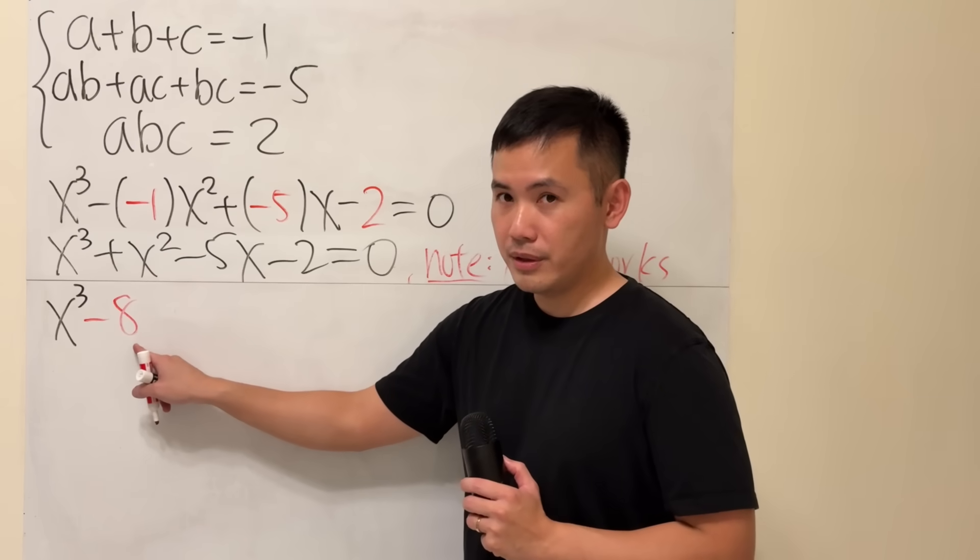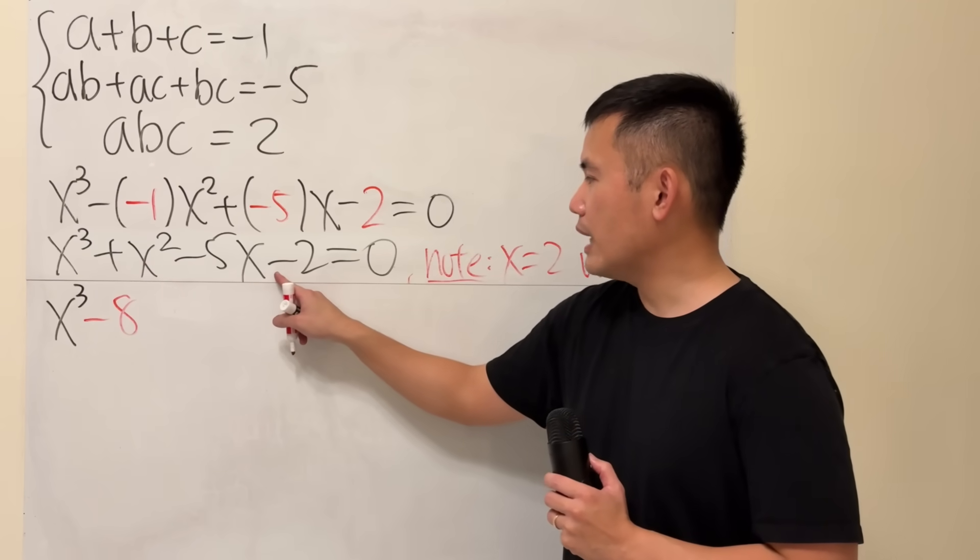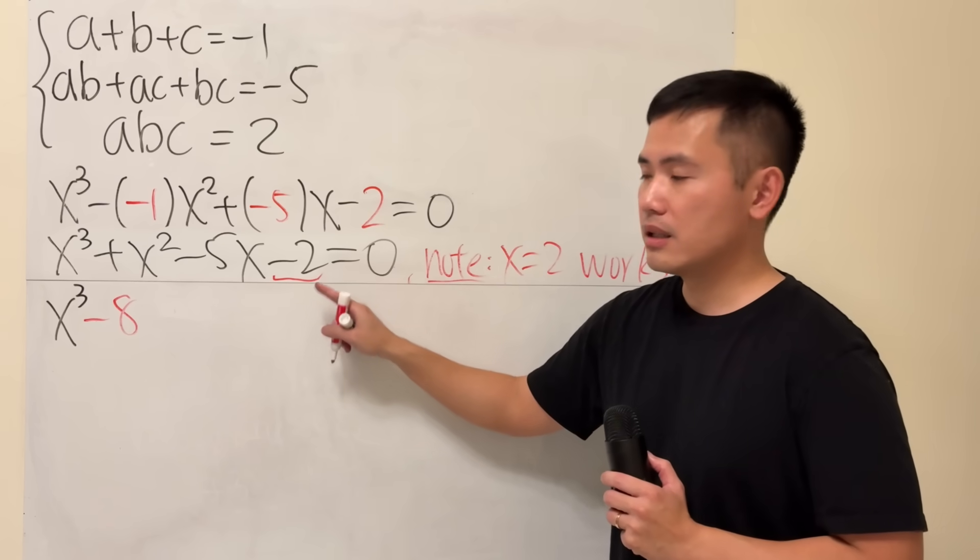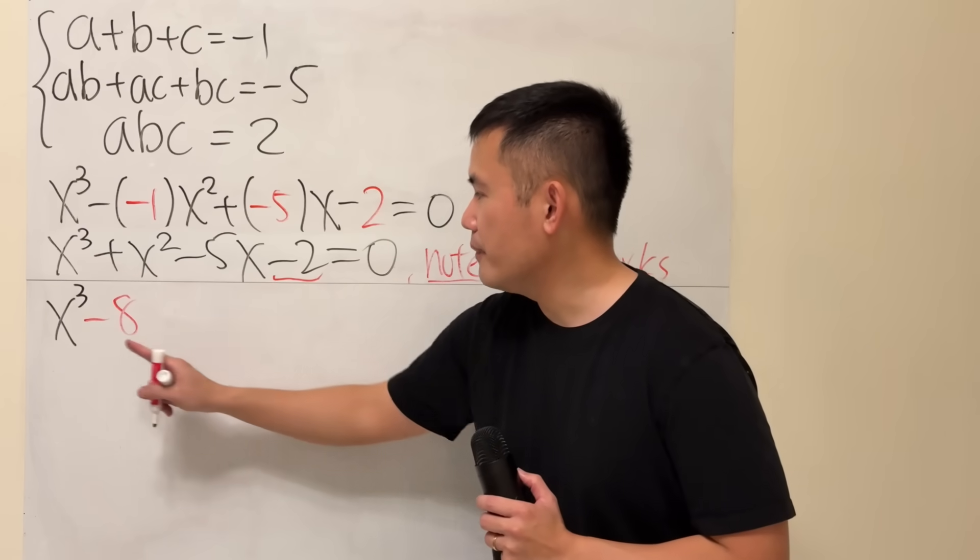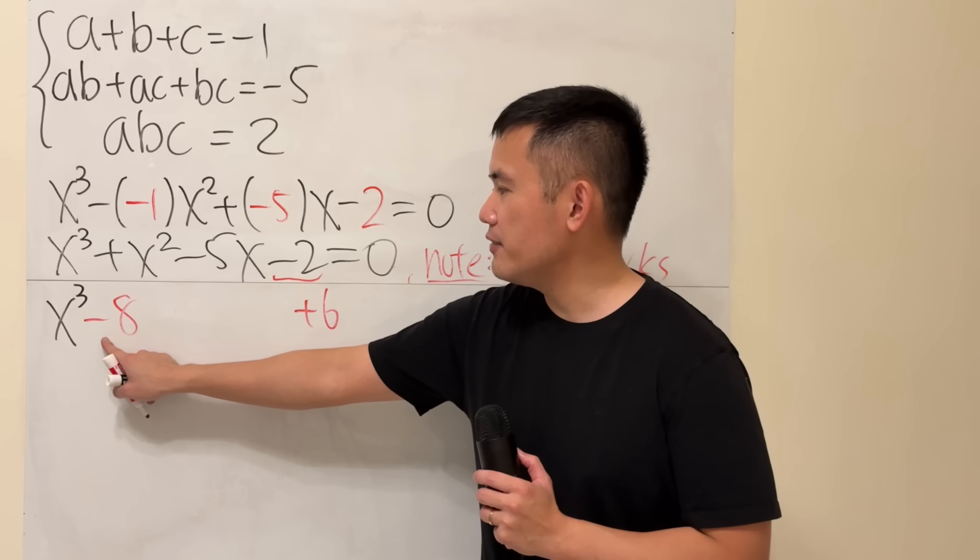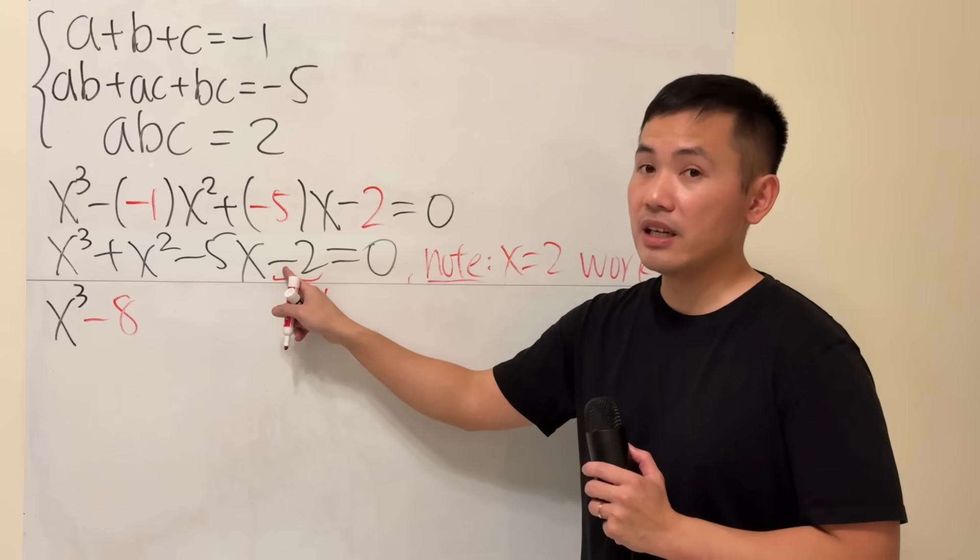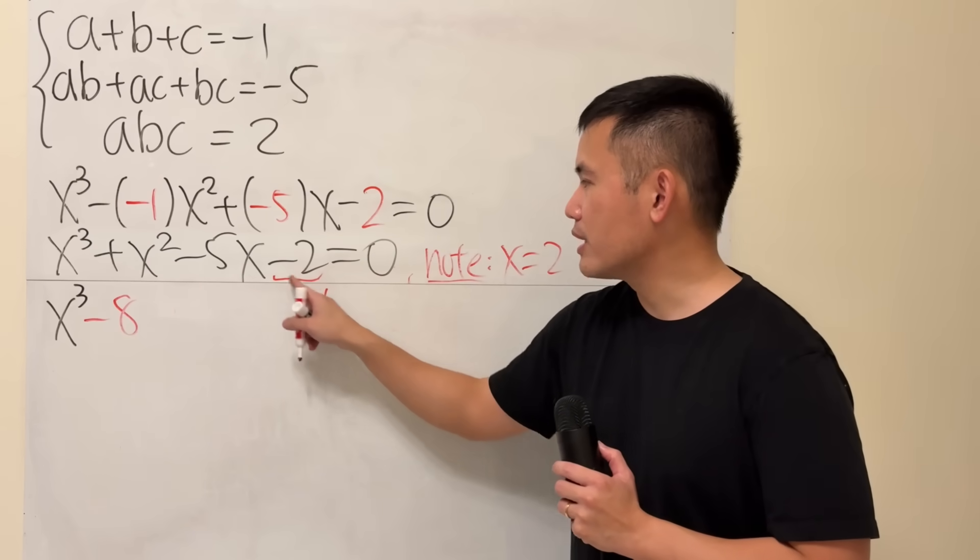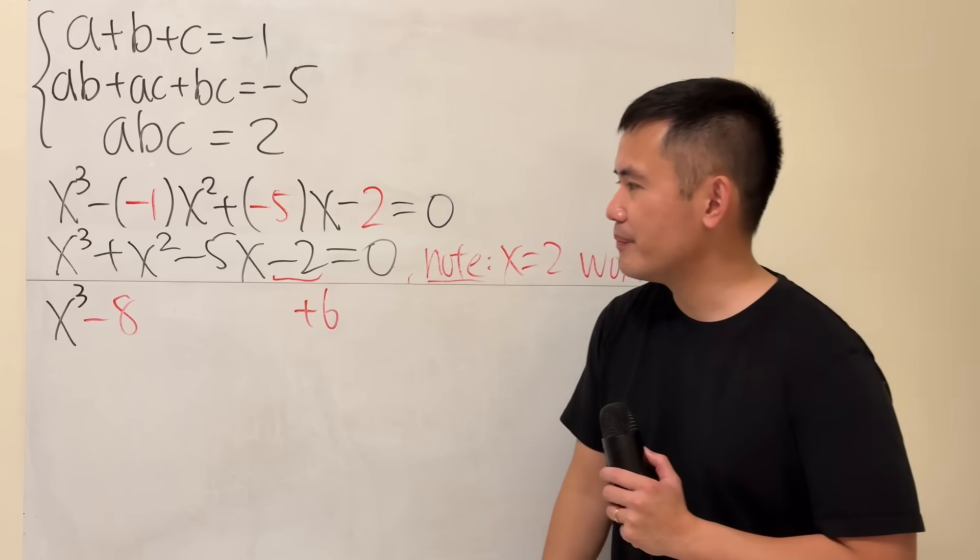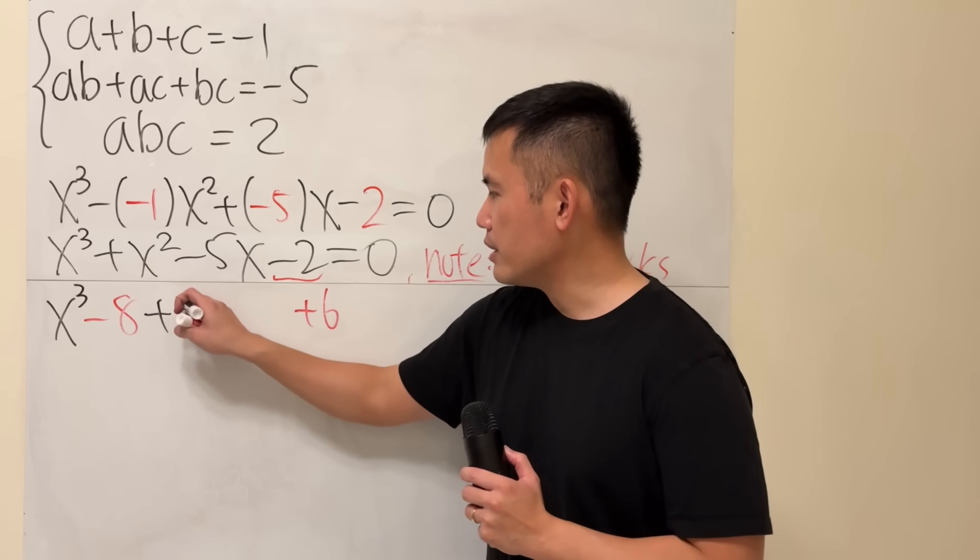Originally, our constant term is negative 2. So we will have to utilize that. We have negative 8 right here. So that means I will have to have a plus 6, because negative 8 plus 6 will give us the negative 2. We broke down negative 2 into this and that, and then it will be the same thing. And it's going to help us to factor. Let's write down the rest that we didn't do.